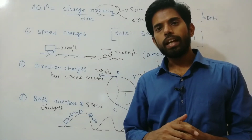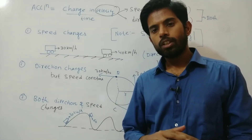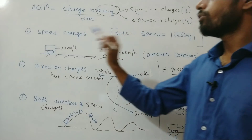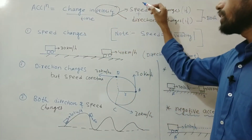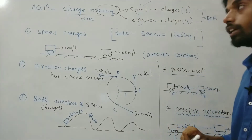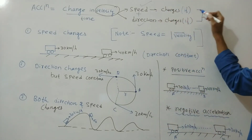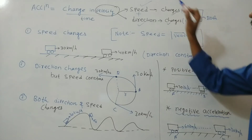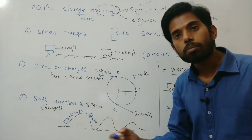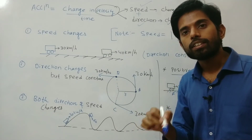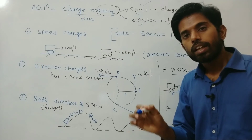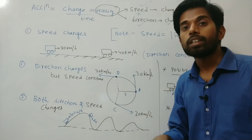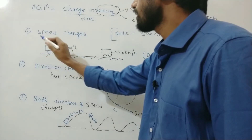As I told you, acceleration is the rate of change of velocity. Velocity is speed along with direction, so to change velocity you can either change the speed or change the direction. If speed changes, there will be acceleration. If direction changes, there will also be acceleration. If both change, that is also a condition of acceleration.